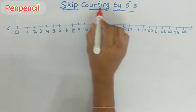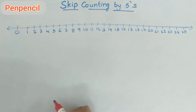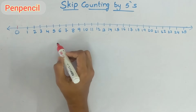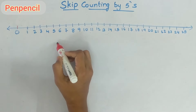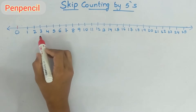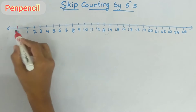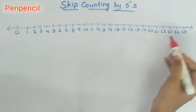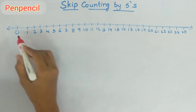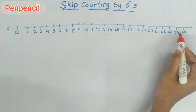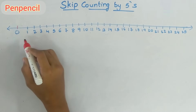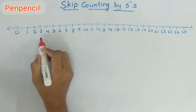Now let us start skip counting by fives. This is also the same as skip counting by twos, but here it is by fives. The first number is zero. I have already written the timeline here — we have the numbers from 0 to 25. We will first check it on the number line and then we will write it again.